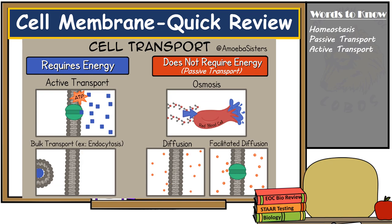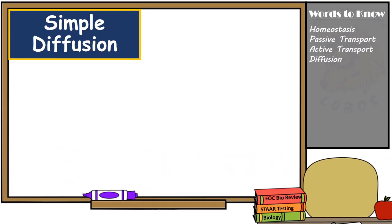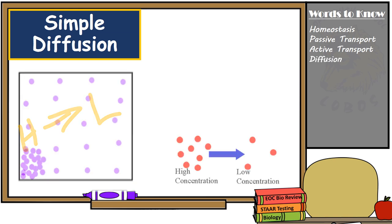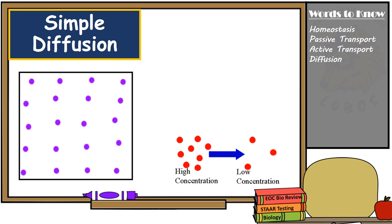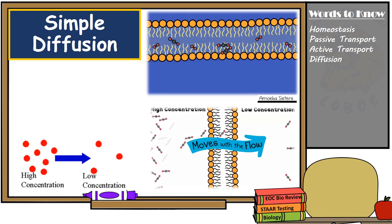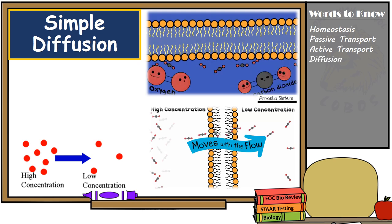The most common form of passive transport used in the cell is known as diffusion. Diffusion is a form of passive transport because it doesn't require any energy to move molecules. It moves molecules from where there's a lot — the area of higher concentration — to where there's only a few — the area of lower concentration — without requiring any energy. Nonpolar small molecules such as oxygen and carbon dioxide can easily pass through the semi-permeable membrane via simple diffusion, moving with the concentration gradient from high to low concentration.